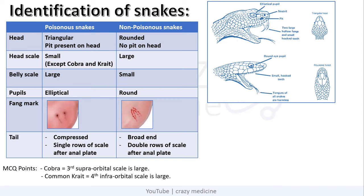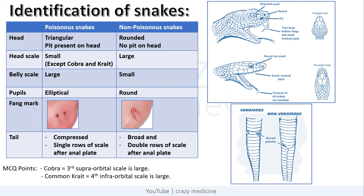Coming to the tail — it is compressed with single rows of scale after the anal plate in poisonous snakes. In non-poisonous snakes the tail is broad with double rows of scale after the anal plate.